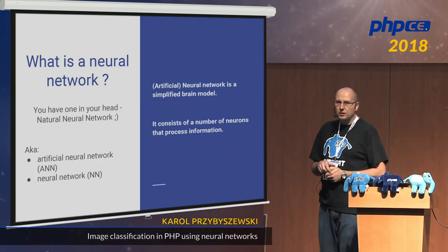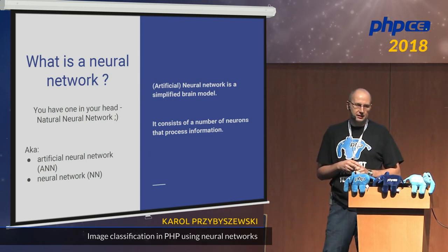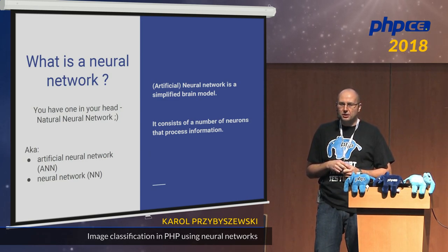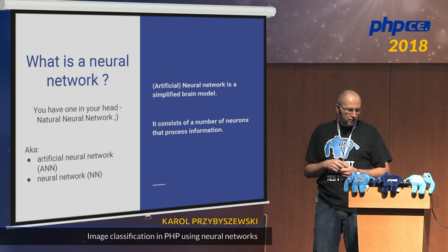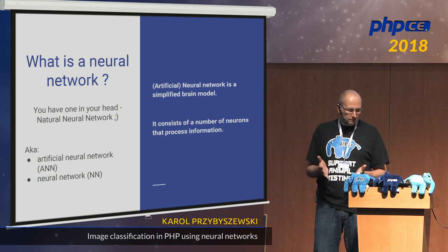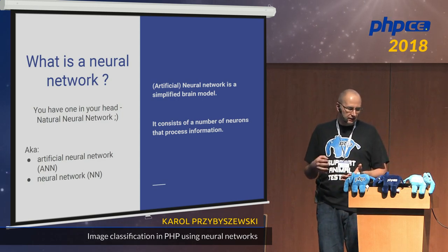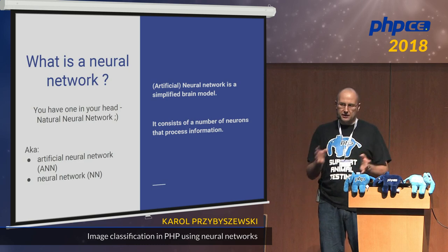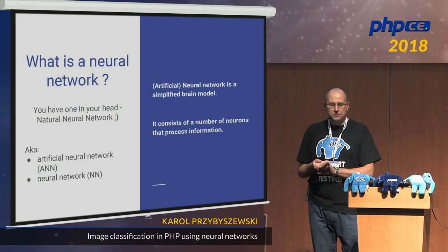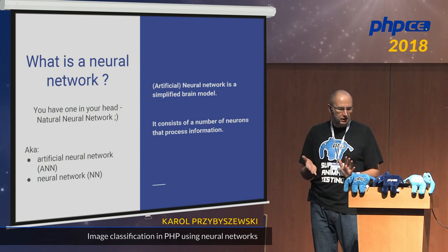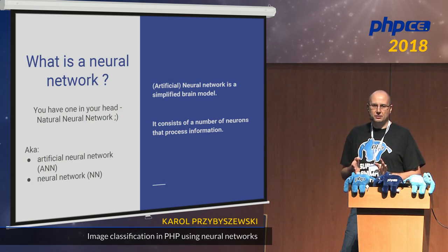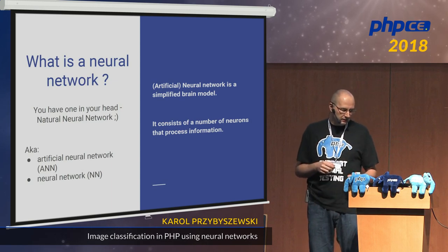What is a neural network? Well, definitely you have one in your head — that's the natural neural network. But today we are going to talk about artificial neural networks, often called ANNs, or just simply neural networks. A neural network is a simplified brain model, and it consists of a number of neurons that process information.